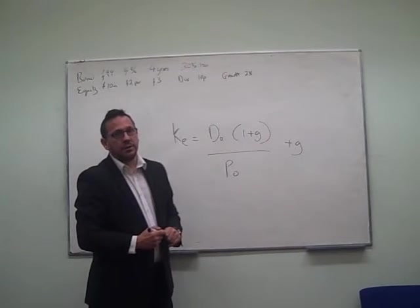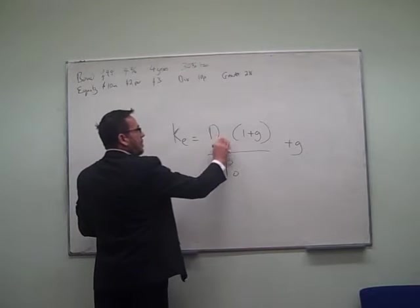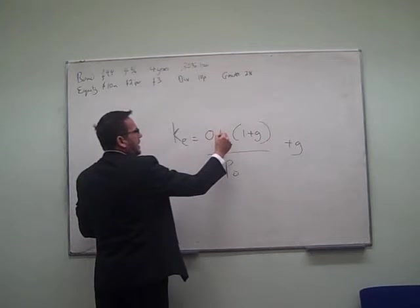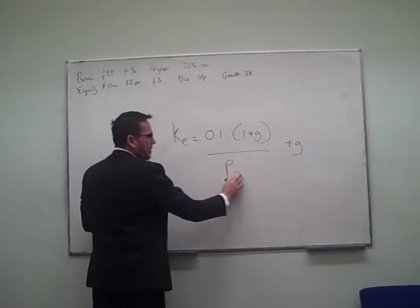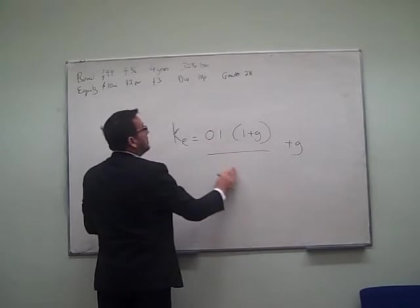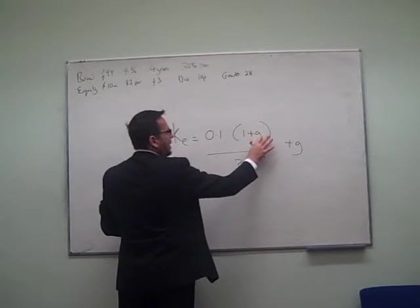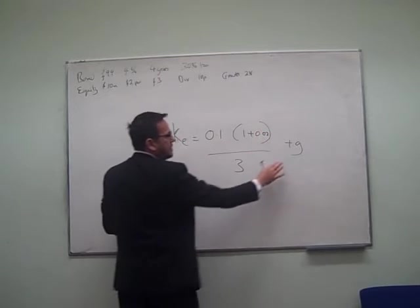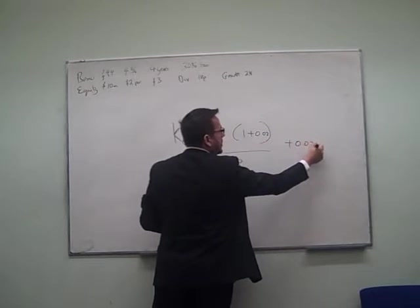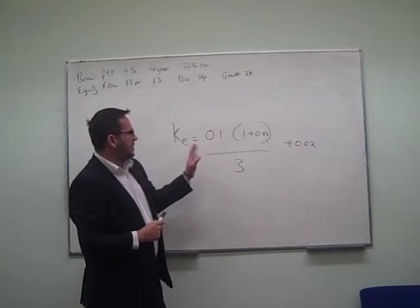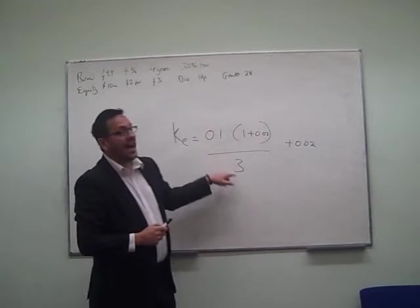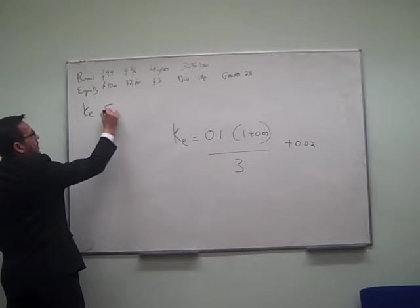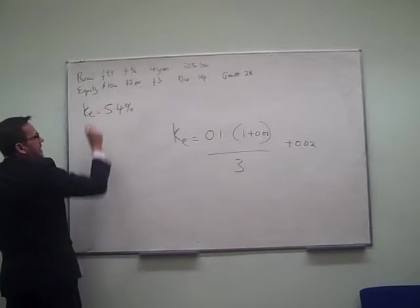It's a matter of dropping these into the equation, remembering to use the same place settings. If we have a £0.10 dividend and write it as 0.1 of a pound, with a £3 share price below and rate of growth of 0.02, write the percentage as a decimal. Simply work that equation through - recommend doing the multiplication on top first, then the division, and finally adding on the 0.02. That gives us a cost of equity of 5.4%, so we'll store that for later.